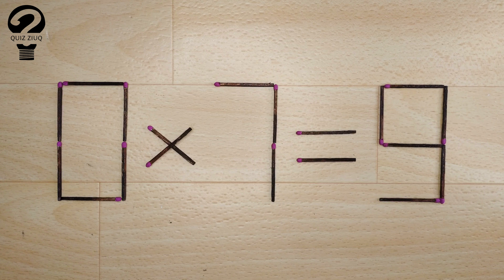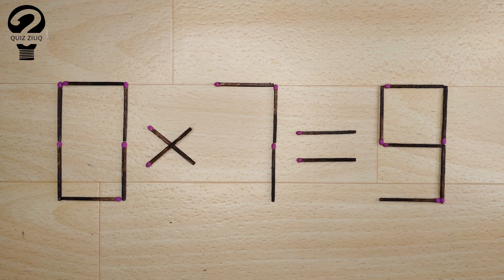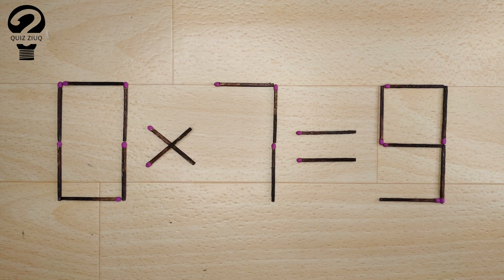Here's the next puzzle. We have this equation, zero times seven equals nine. Our equation is incorrect, and we need to move one match to make our equation correct.